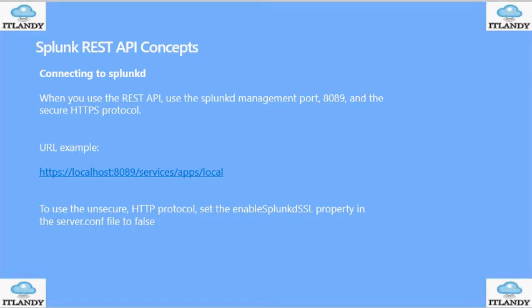We are talking about this very basic example here. To use the unsecure HTTP protocol, you can set the 'enable Splunk SSL' property to false, because when it is set to true it means we need a certificate and we need port 443.